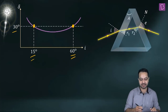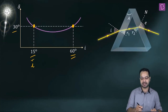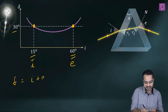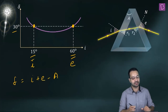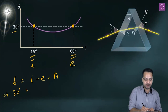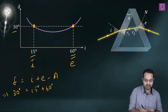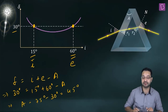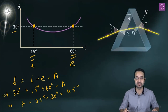δ = i + e − A. From the graph δ = 30°, i = 15°, e = 60°. So 30 = 15 + 60 − A, giving A = 75° − 30° = 45°. This principle makes solving the question very simple.